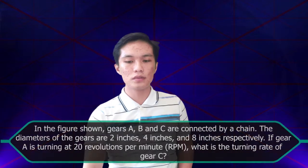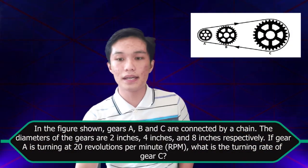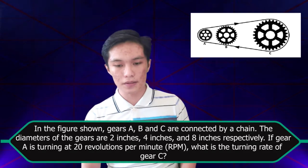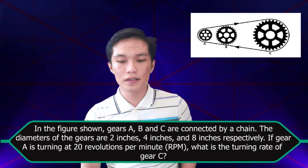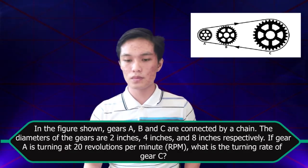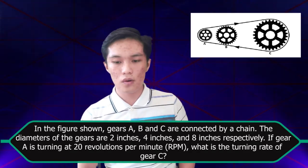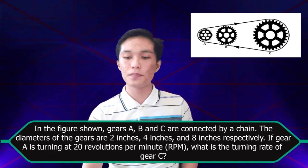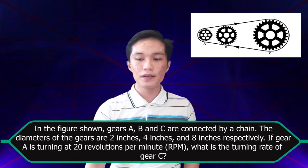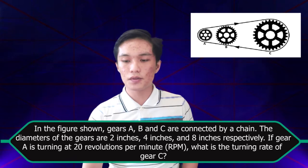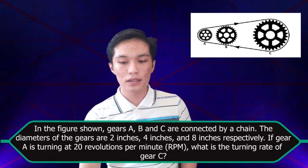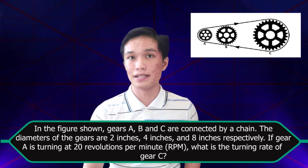For the next problem: in the figure shown, gears A, D, and C are connected by a chain. The diameters of the gears are 2, 4, and 8 inches respectively. If gear A is turning at 20 revolutions per minute, what is the turning rate of gear C?